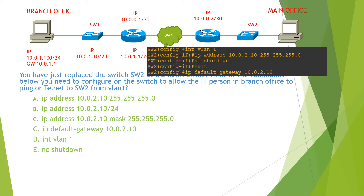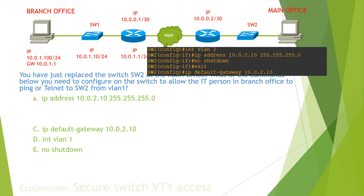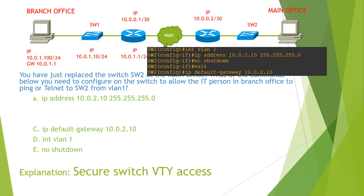After enabling interface VLAN 1, you exit out of it and set the default gateway. Therefore, the answers for this question are A, C, D, and E. You can find the detailed explanation in the video 'Secure Switch VTY Access.'